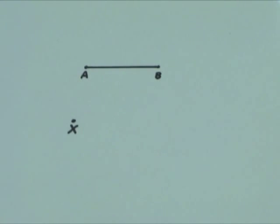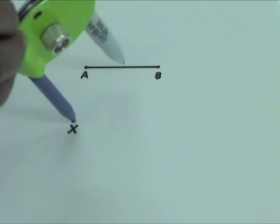Without changing the compass width, move the compass point to X and draw an arc.